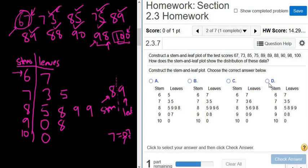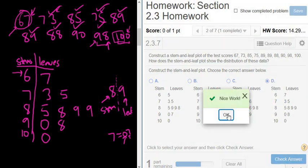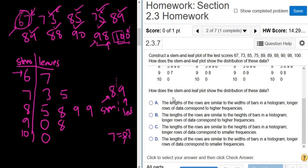All right. So let's go ahead and pick the correct choice. Looks like it's going to be D. Good. Good stuff. Continue. See what it wants. How does the stem and leaf plot show the distribution of these data?